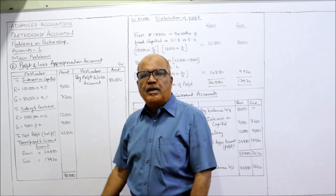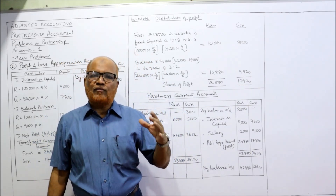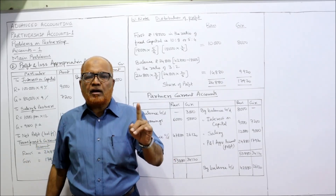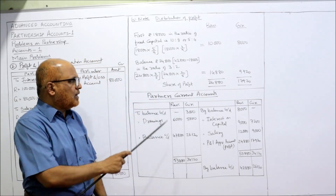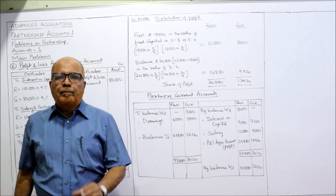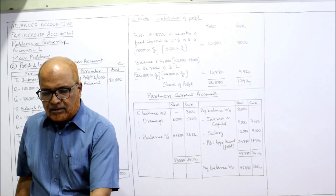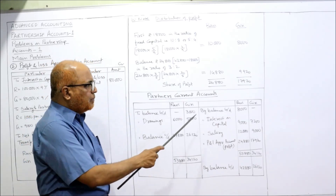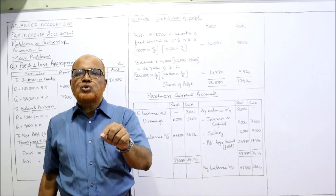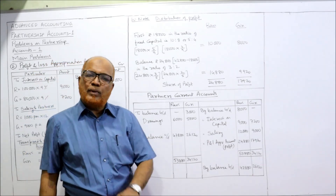Profit and loss appropriation account is now completed. Now we prepare the current account of Ravi and Giri. We can make separate current accounts or combine them with two columns on each side — debit side with two columns and credit side with two columns for Ravi and Giri. At the beginning of the year, Ravi's current account shows a credit balance of eight thousand, so by balance brought down: Ravi eight thousand on the credit side. Giri's current account shows a debit balance, so debit side balance brought down three thousand. Opening balance is taken.